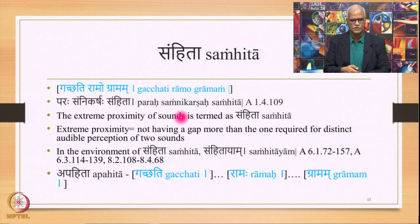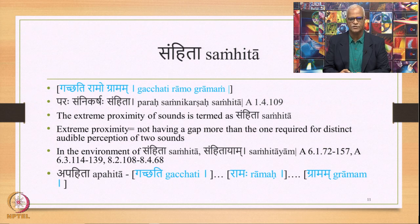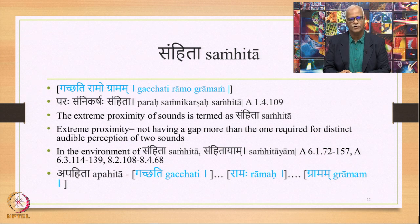The extreme proximity of sounds is termed Samhita. What is the measurement of this extreme proximity? It is defined as not having a gap more than the one required for distinct audible perception of two sounds. When two sounds do not have a gap more than the one required for distinct audible perception, that situation is called Samhita. What it assumes is that in order to have a distinct audible perception of two sounds, some biological gap is necessary. To have only that much gap is what is extreme proximity. If you have more than that as a gap, then that is not called Samhita.